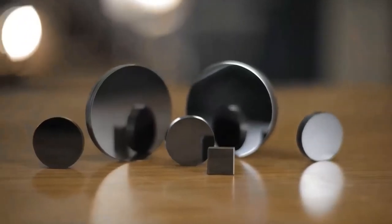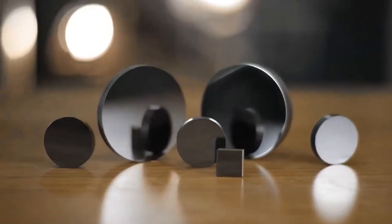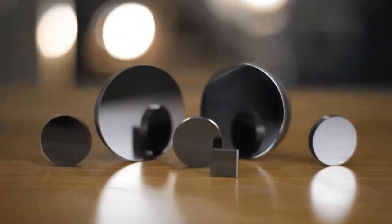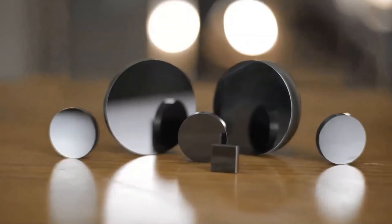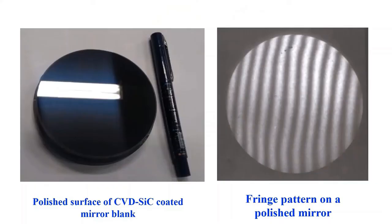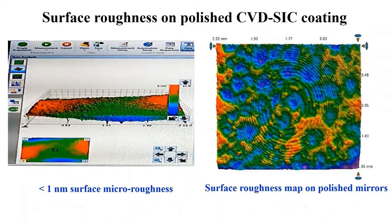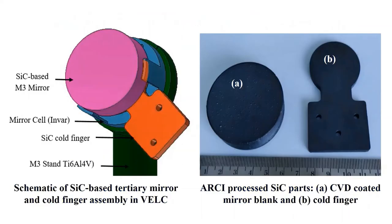The reflecting surface on CVD silicon carbide is generated through surface grinding and diamond paste polishing, followed by ion beam polishing in a sequential manner. It has been possible to achieve surface roughness less than 1 nm on the polished surface of CVD silicon carbide. ARCI-produced silicon carbide-based tertiary mirror, coupled with a silicon carbide cold finger, will be used in the on-board Visible Emission Line Coronagraph system of India's solar mission.